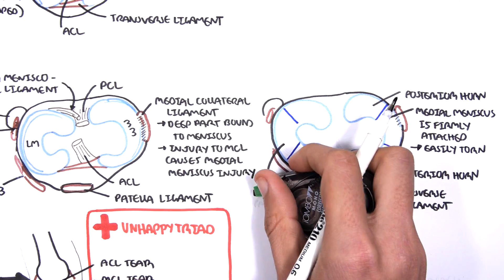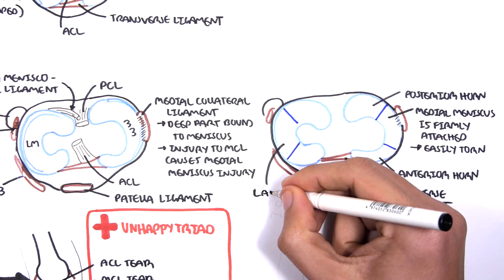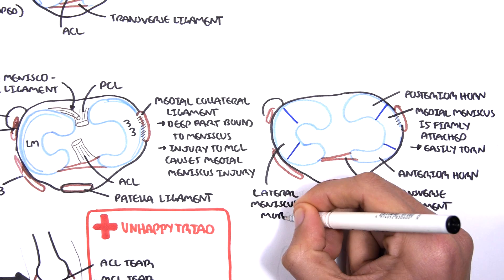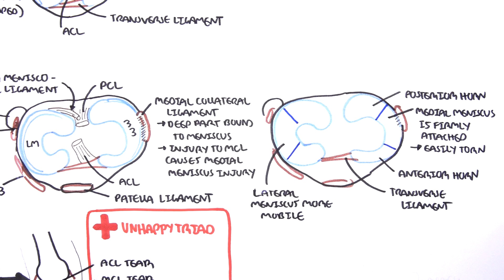The lateral meniscus on the other hand is slightly more mobile because the posterior horns of the lateral meniscus does not attach firmly onto the tibia.